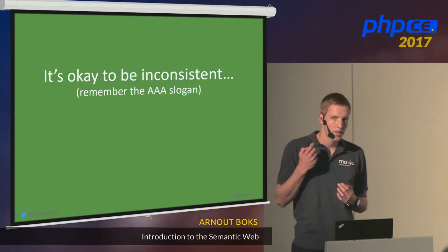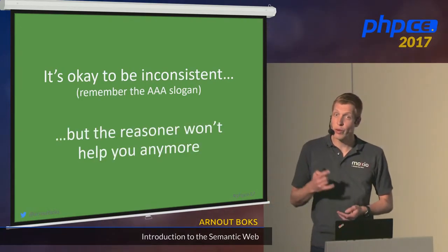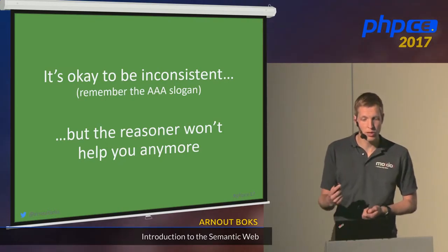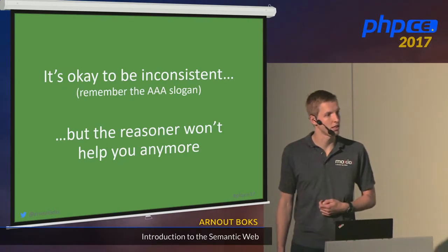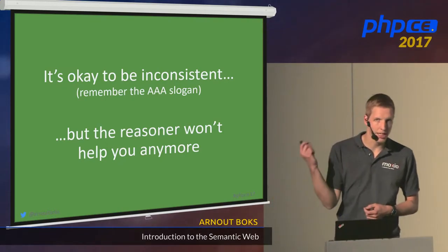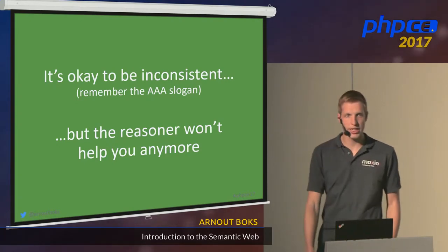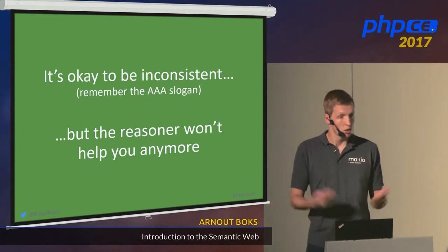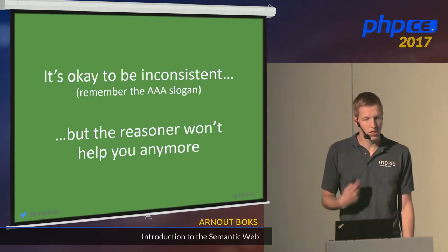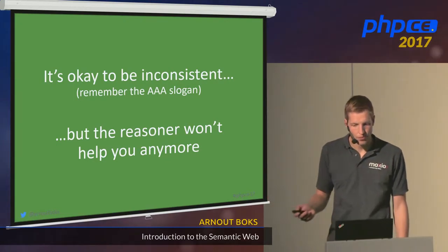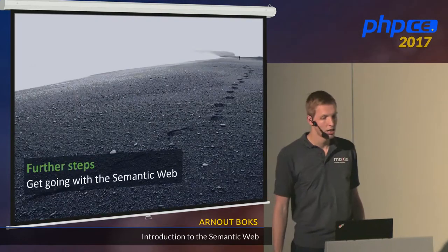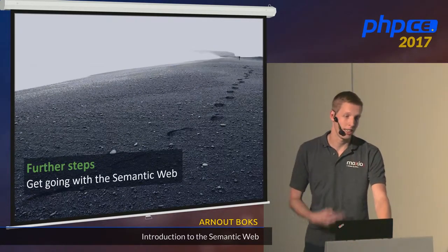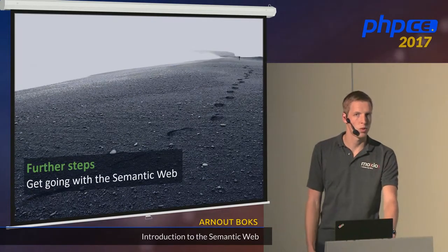These inconsistencies will happen, and that's okay — remember the AAA slogan. Anyone can say anything about any topic, so we can also publish data that contradicts itself. It's part of the deal. Just remember: a reasoner will never help you anymore once there's an inconsistency, and that's what you get back.